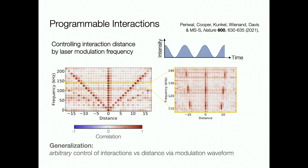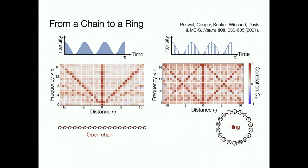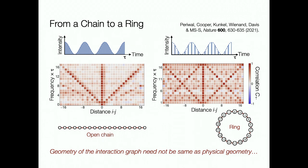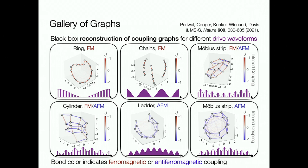By controlling the modulation waveform, we have even more flexible control of the structure of interactions. One simple example: rather than simple sinusoidal modulation, if I additionally pulse this waveform on and off at a higher frequency, I can connect the ends of a one-dimensional chain. This is a very general trick for taking whatever interaction graph I have and turning it into the same graph with periodic boundary conditions. This illustrates that the effective interaction geometry doesn't need to match the physical geometry of the sites in my array. Playing with different modulation waveforms, we can generate a whole range of different interaction graphs.